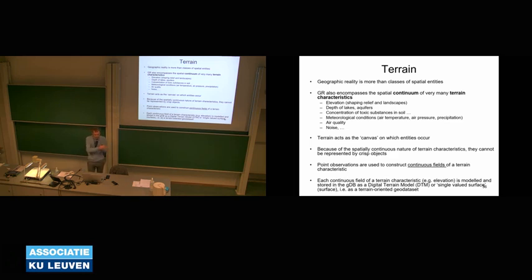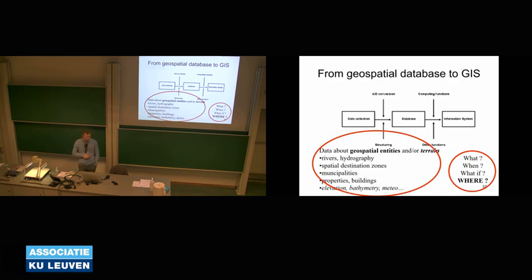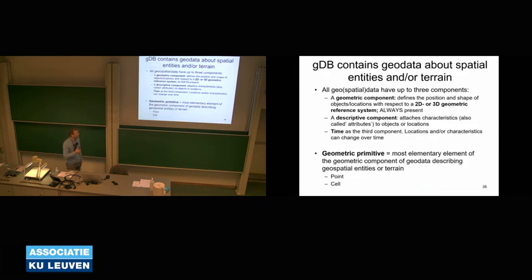Because they are continuous, they cannot be represented by crisp objects. In fact, if we look at reality, it's more than entities — it's entities plus terrain characteristics. In our database we have data about geospatial entities but also about terrain characteristics. For example: elevation, bathymetry, meteorological conditions. The main question you will still ask is 'where' — for example, where are my zones very prone to flooding? Then you will need information about elevation, about this terrain characteristic. Entities and terrain characteristics are very important concepts in GIS.